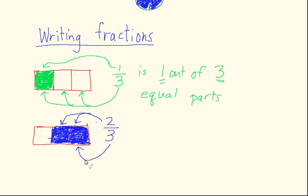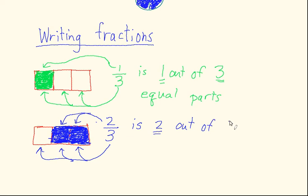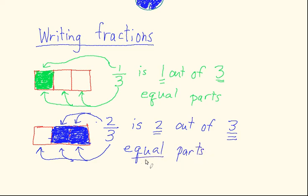There were three equal parts of the rectangle, and I've shaded in two of them. So two out of three, or two thirds, have been shaded in. We can write two over three — it's the same as saying two out of three equal parts have been shaded in. It's very important to stress that these need to be equal parts if you want to talk about fractions, because if the parts were unequal, two thirds of the rectangle would not necessarily be shaded in — it would be out of proportion.